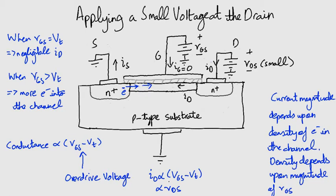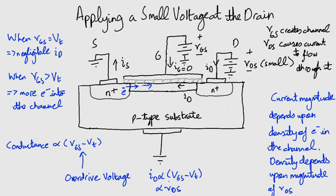To put it simply, VGS creates a channel, and VDS causes the current to flow through it by applying a potential difference. VGS cannot conduct current on its own, that is when drain and source are shorted, as both drain and source would be at same potential.